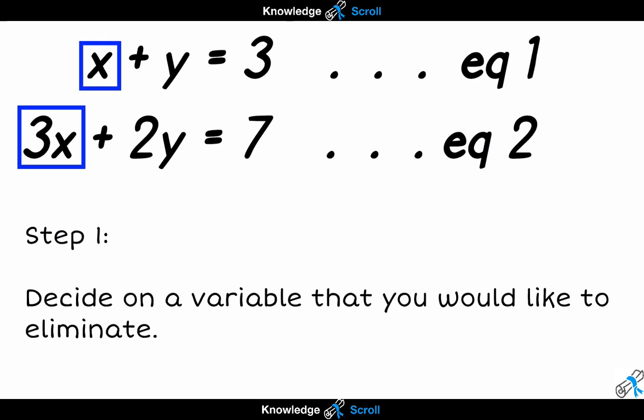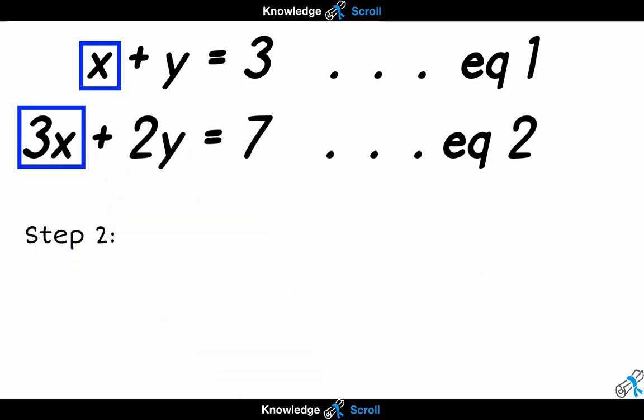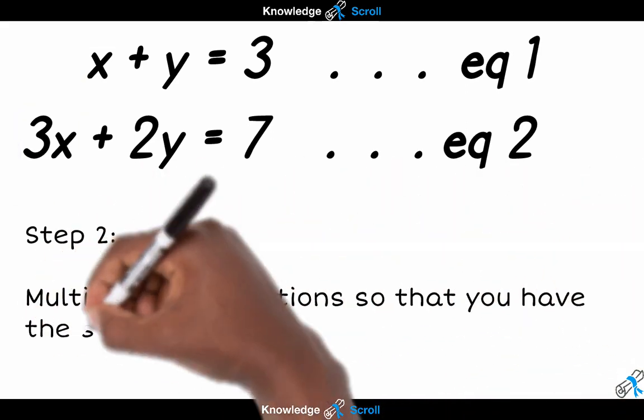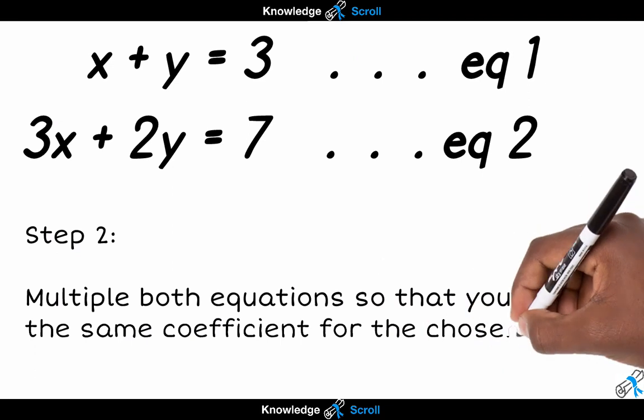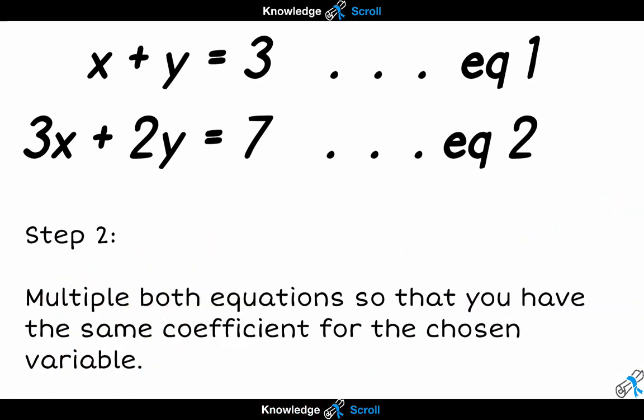We are at step 2 now. As you can see, in equation 1 there is a single x value, but in equation 2 we have 3 x's. So we need to multiply both equations so that they have the same number of x's. I would multiply equation 1 by 3 and equation 2 I would multiply by 1, which is essentially keeping it the same.